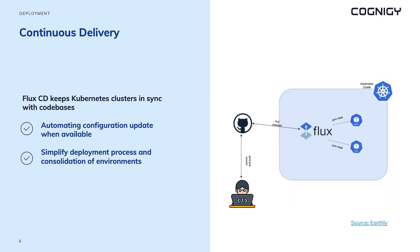Continuous delivery is the practice of automating the software release processes, ensuring that code changes are consistently and automatically built, tested, and deployed to production. At Cognigy, we use FluxCD, a tool that enables continuous delivery for Kubernetes clusters and implements a GitOps approach. When a new code change is pushed to a Git repository, FluxCD detects the change and automatically deploys it to the Kubernetes clusters, without any manual intervention. In contrast to traditional deployments such as pipelines, manual scripts, and custom configurations, FluxCD greatly simplifies deployment and consolidation of environments.